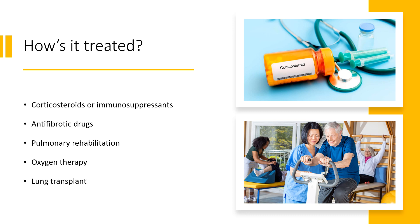How is it treated? If you have pneumonitis, the best way to treat it is to avoid its cause. Your provider may also recommend the following: Corticosteroids or immunosuppressants — these medications help reduce lung inflammation; your provider may prescribe prednisone, mycophenolate, or azathioprine. Antifibrotic drugs — these help slow down scarring in your lungs; your provider may prescribe pirfenidone or nintedanib. Pulmonary rehabilitation — you and a healthcare provider will work together to create an exercise program to help increase your lung strength. Oxygen therapy — helps provide your body with oxygen when breathing is difficult; you may need it at all times or only during certain activities such as exercising or sleeping.